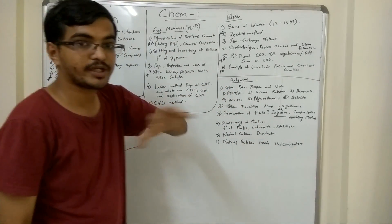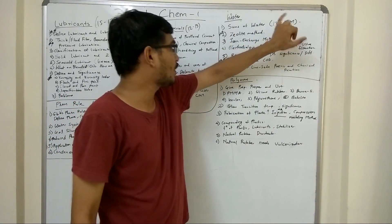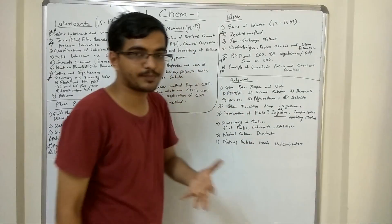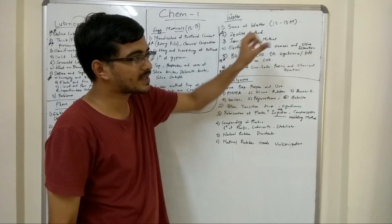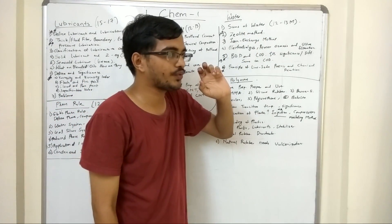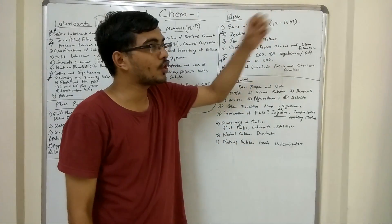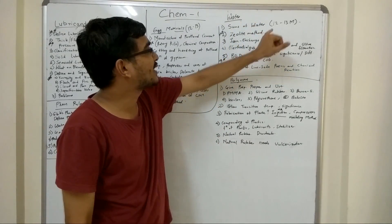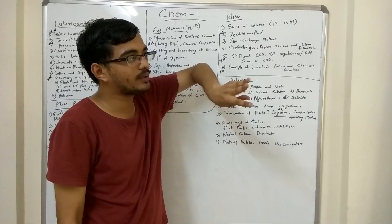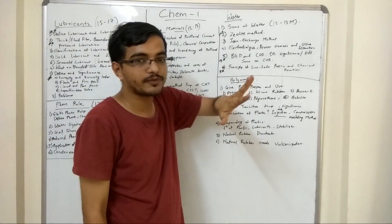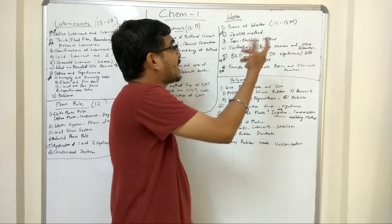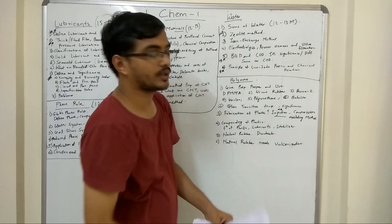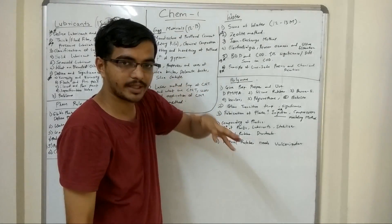Next coming to water. Sums of water are very important - around 12-13 marks of sums on water will come. If you attack the sums of chemistry, you can catch around 15-16 marks if you do all the sums properly. Sums - first type is a bit easy, and second and third types are very easy if you understand the theory. There are around 3-4 types, and generally 3 sums are asked. One type is from zeolite method, one is from ion exchange method, one is from COD, and another is from lime soda.